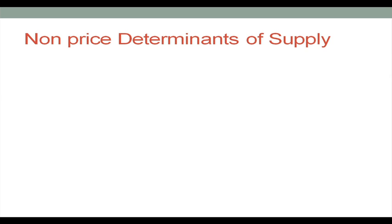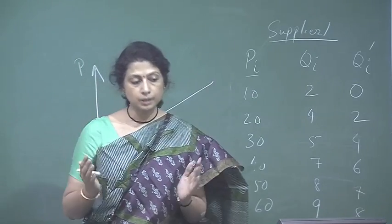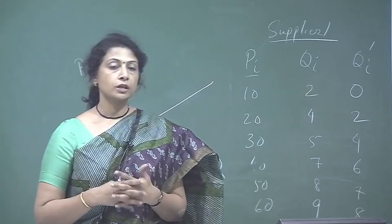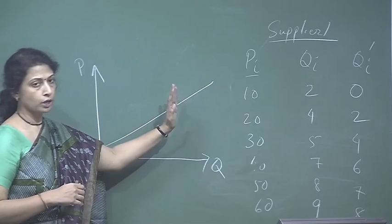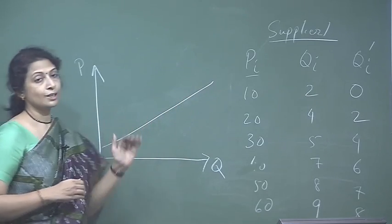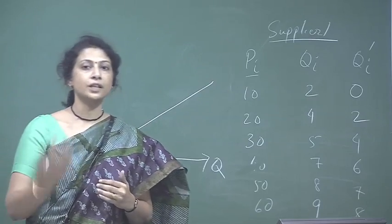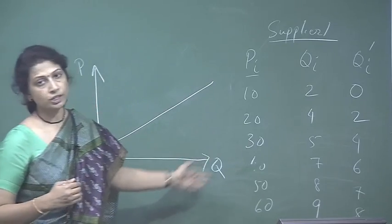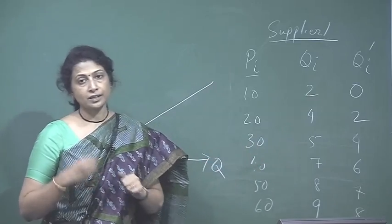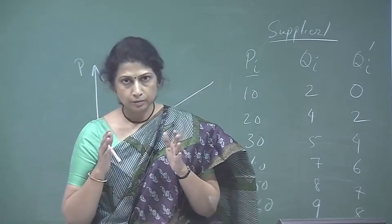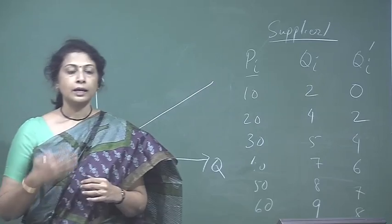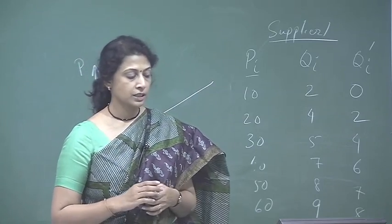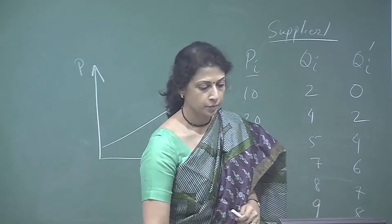Coming back to the supply function: we are interested in what affects supply. The supply curve shows the relationship between price and quantity — if price moves up or down, supply moves accordingly. But there are other factors, the non-price determinants of supply, which we assumed constant when developing the supply curve. What happens when any of those variables change is what we now examine.